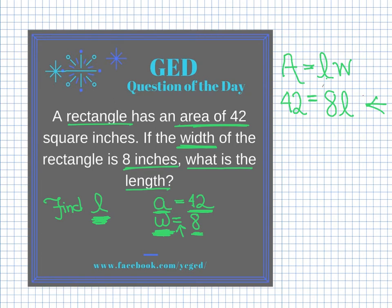Now I need to solve this equation for L. Currently 8 and L are multiplying, and to get a letter alone you do the opposite operation — the opposite of multiply is divide. I'm going to divide by 8, and the rule is I can do whatever I want to an equation as long as I do it to both sides. 8 divided by 8 cancels, leaving just L alone. Now I need to calculate 42 divided by 8, which won't be a whole number, so I'll use my calculator.